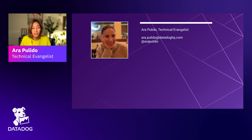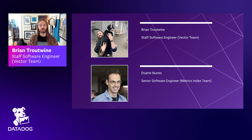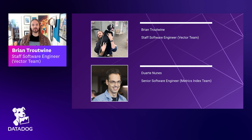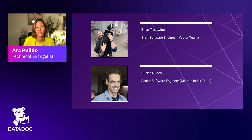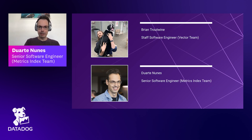Today to talk about Rust, the important people are Brian and Duarte. Brian is a staff engineer at Datadog with a background in systems programming, particularly single-machine performance. Duarte is an engineer on the metrics index team, currently working on a rewrite of an existing service, with a background in low-latency distributed systems.